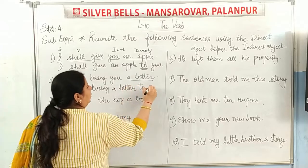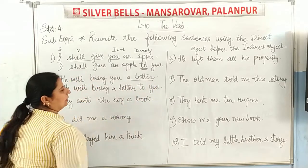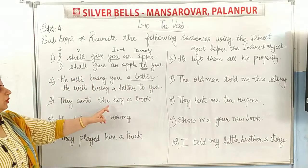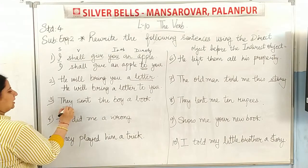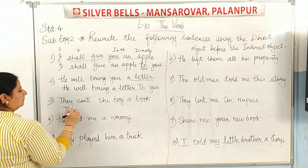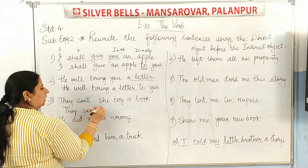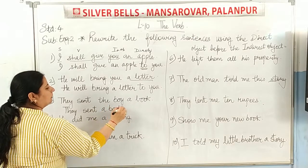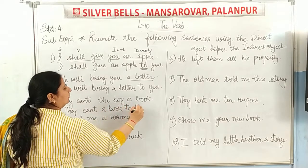By adding 'to,' we bring the indirect object to the back. For example: 'They sent the boy a book' becomes 'They sent a book to the boy.'